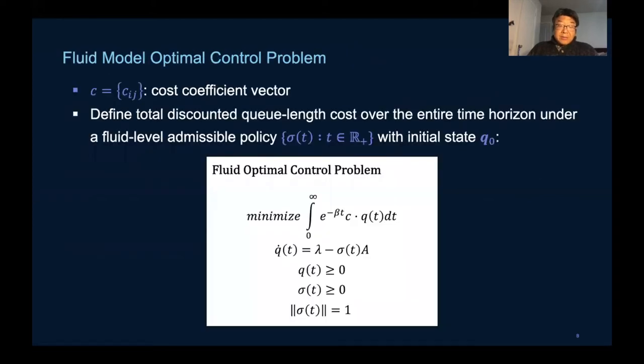We're now ready to present our control formulation. For each initial state Q zero, we seek to determine a fluid level control policy that minimizes the total weighted queue length over the entire time horizon.